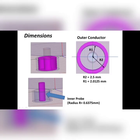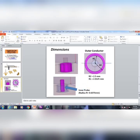This is the appearance of the SMA connector in the simulator. Let us design this step by step. Here are the practical, ideal dimensions we are considering: for the outer conductor, a 2.5 mm radius; we remove 2.0125 mm to create the hollow outer conductor. The standard radius for the inner conductor is 0.6375 mm. The length depends on your substrate and patch dimensions.